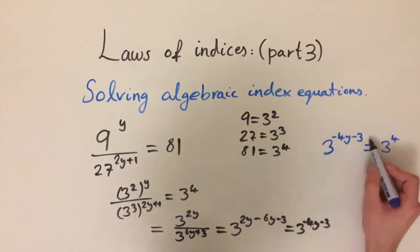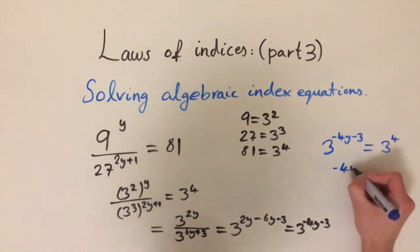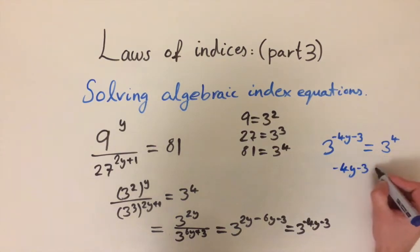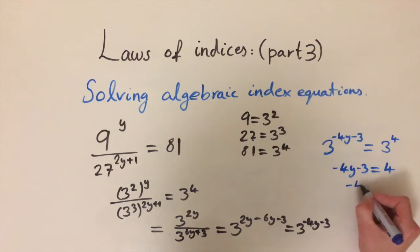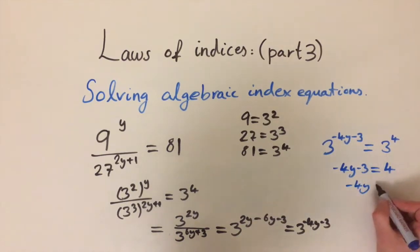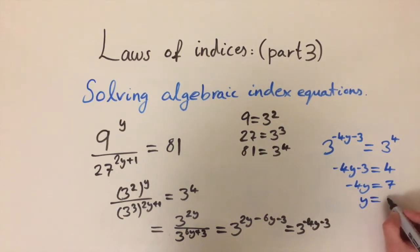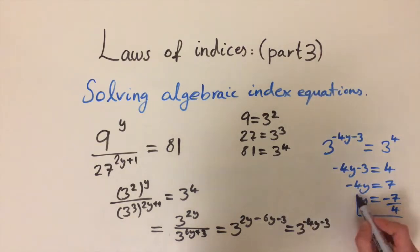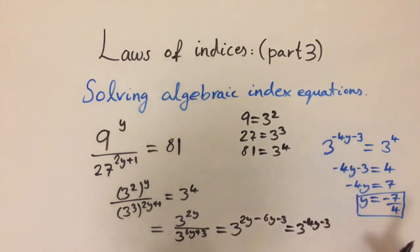Since both sides have base 3, we equate the exponents: minus 4y minus 3 equals 4. Adding 3 to both sides gives minus 4y equals 7, then dividing by minus 4 gives y equals minus 7 over 4. That's our solution. You can check it with a calculator. This is the general method for solving an algebraic index equation.